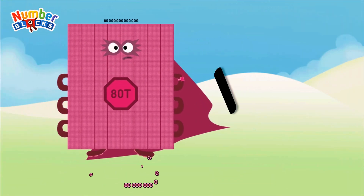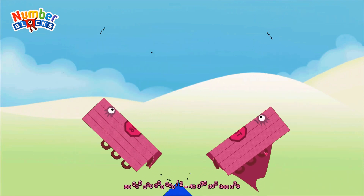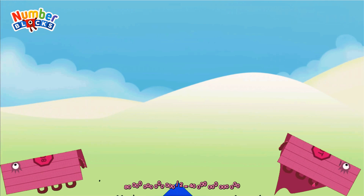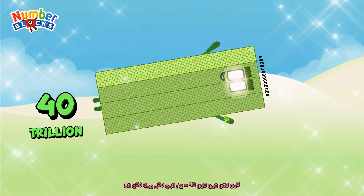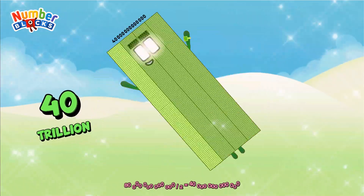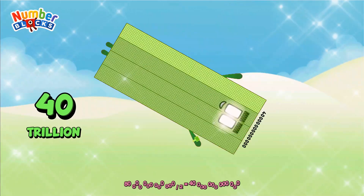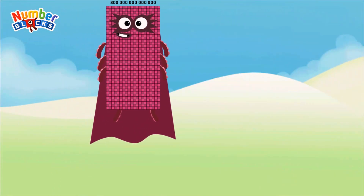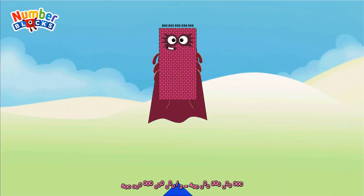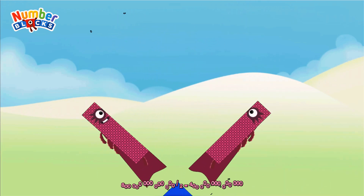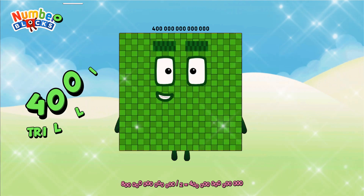180 Trillion divided by 2 equals 40 trillion. 800 trillion divided by 2 equals 400 trillion.